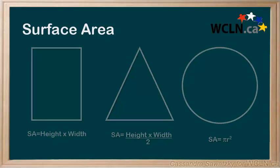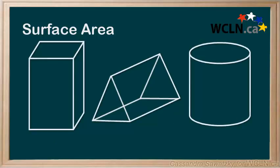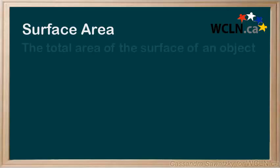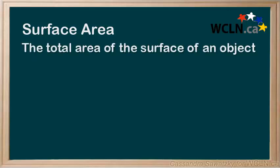So what if these shapes are used to build a three-dimensional object? Adding the area of the shapes within a 3D object gives us something we like to call surface area. Surface area is the total area of the surface of an object.